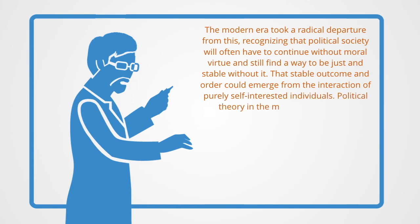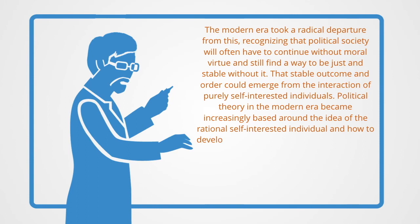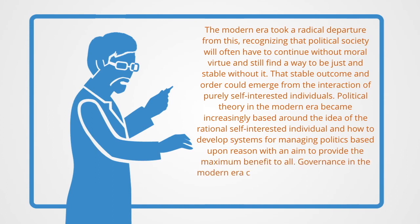Political theory in the modern era became increasingly based around the idea of the rational self-interested individual and how to develop systems for managing politics based upon reason with an aim to providing the maximum benefit to all. Governance in the modern era came to be understood in terms of social contracts to serve rational self-interested individuals.